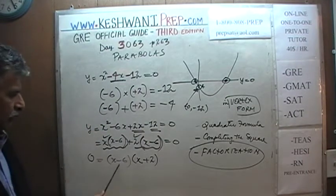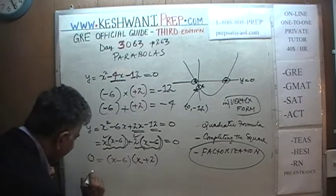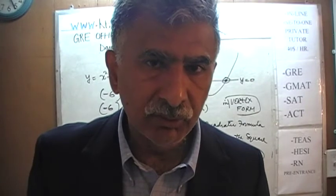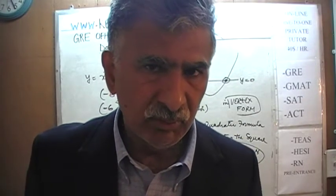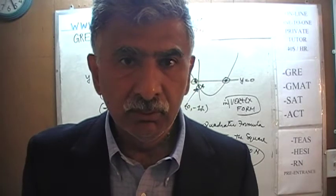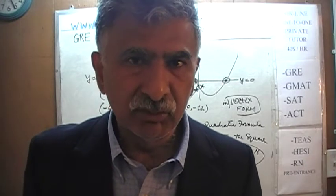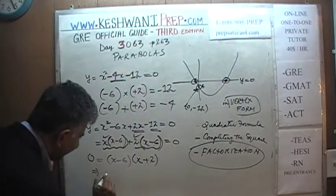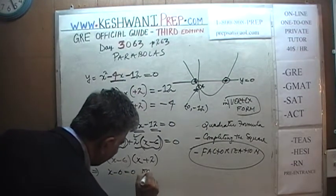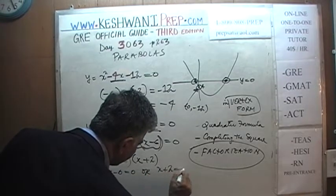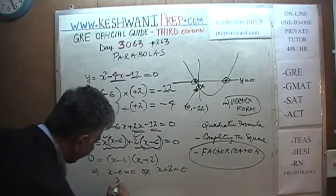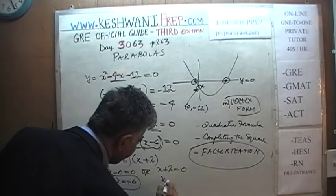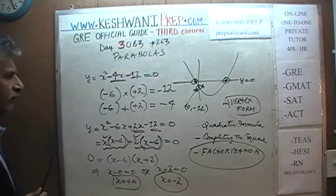The common factor is (x - 6), so we factor it out to get (x - 6)(x + 2) = 0. If the product of two quantities equals zero, at least one must be zero. Therefore either x - 6 = 0, giving x = 6, or x + 2 = 0, giving x = -2. Those are our x-intercepts.